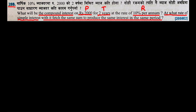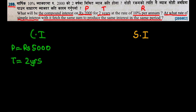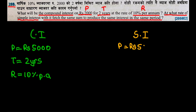For 28B, the given values for compound interest are: principal = Rs.2000, time period = 2 years, and rate = 10% per annum. For the simple interest case, the principal is the same at Rs.2000, the time period is the same at 2 years, and we need to find the rate. First, we calculate the compound interest.